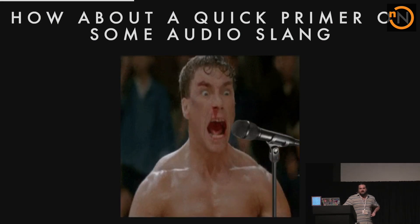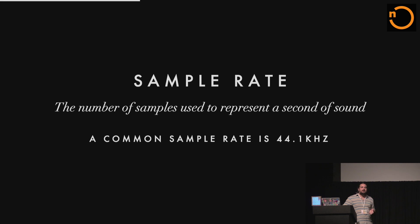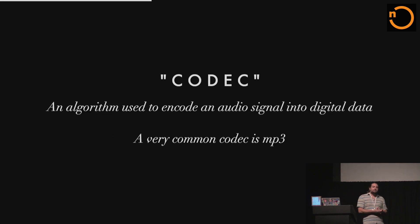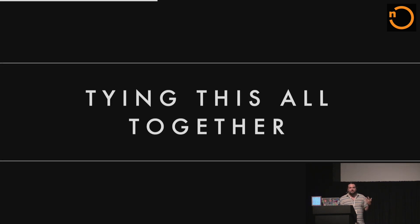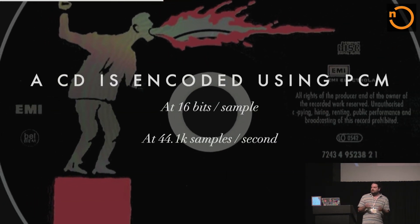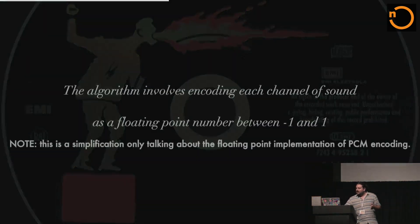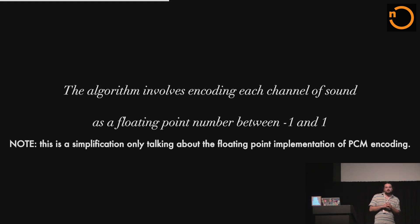Let me give you a bit of a primer on some audio terminology. Sample rate is the number of samples per second of sound — a common sample rate is 44.1 kilohertz. Bit depth is the number of bits used to encode a single sample — a common bit depth is 16 bits. A codec is an algorithm used to encode an audio signal into digital data — a common codec most people know is MP3. A practical example tying this together is a CD, which is encoded in PCM: 16 bits per sample at 44,100 samples per second.